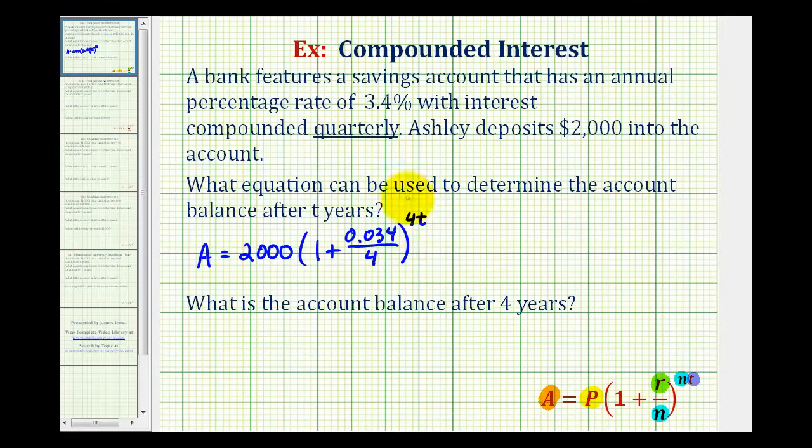Now let's go ahead and simplify this. We'd have A equals 2,000 times 1 plus 0.034 divided by 4. This is going to be 1 plus 0.0085. So we have 1.0085 raised to the power of 4T. So this would be the equation that would give us the account balance after T years.